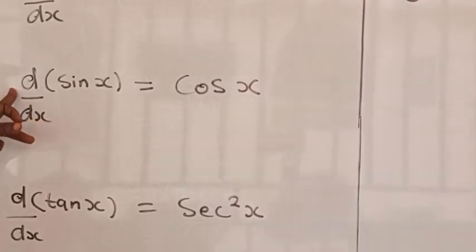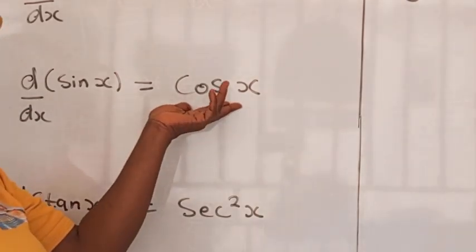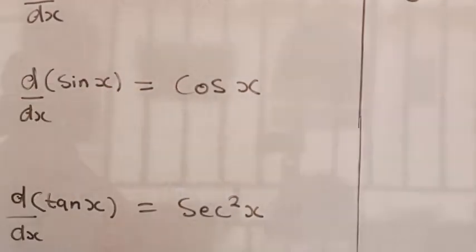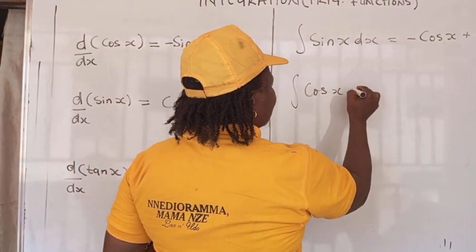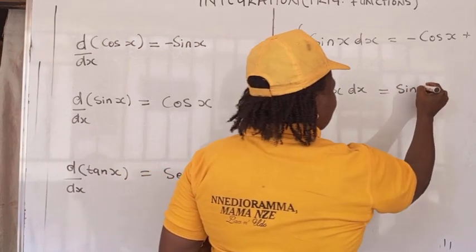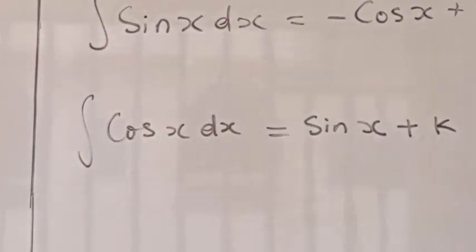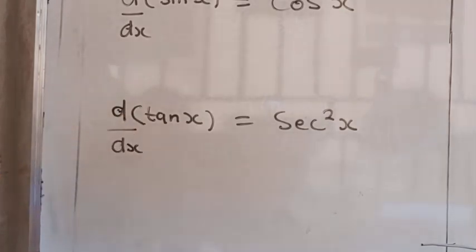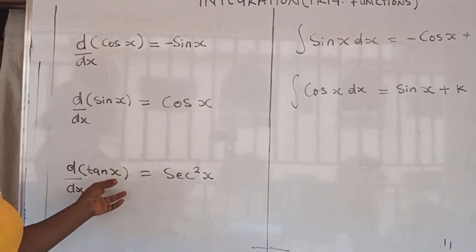And differentiation of sin x is equal to cos x. So integration of cos x dx gives us sin x. And integration of sec squared x will give us tan x.